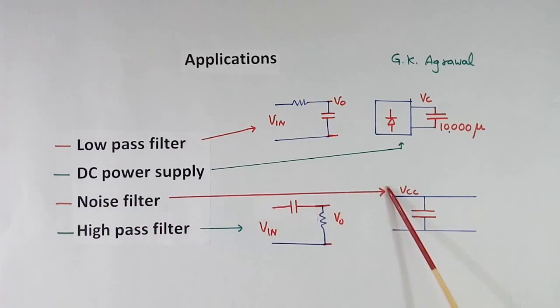Then the noise filter. In PCBs, power supply will be there. There will be so many ICs. So in power supply, small small spikes will come. That is called the noise. To filter those spikes or noise, so many small value of capacitors are used.